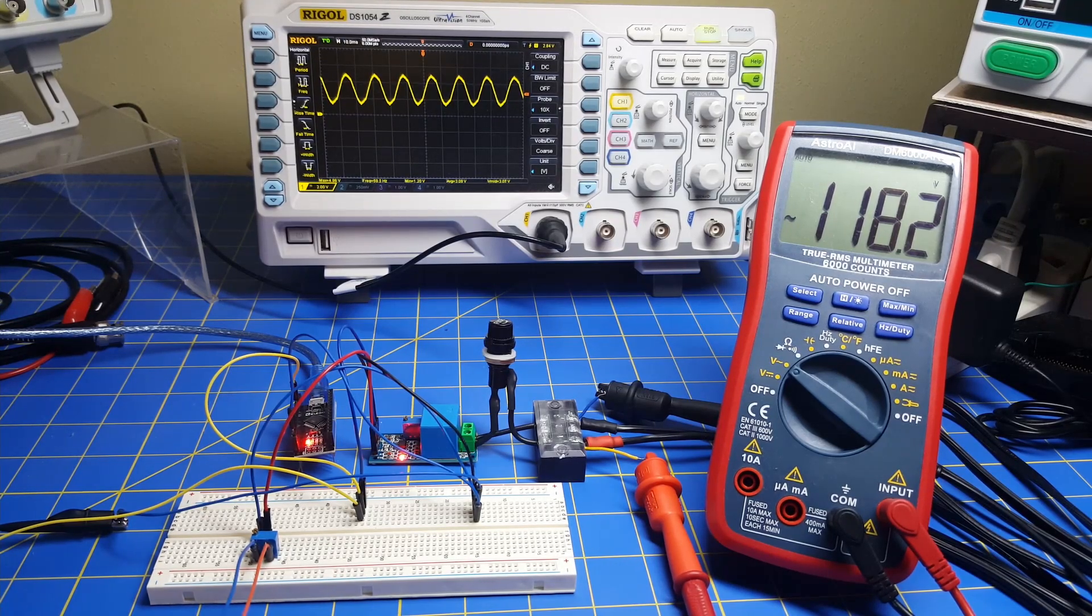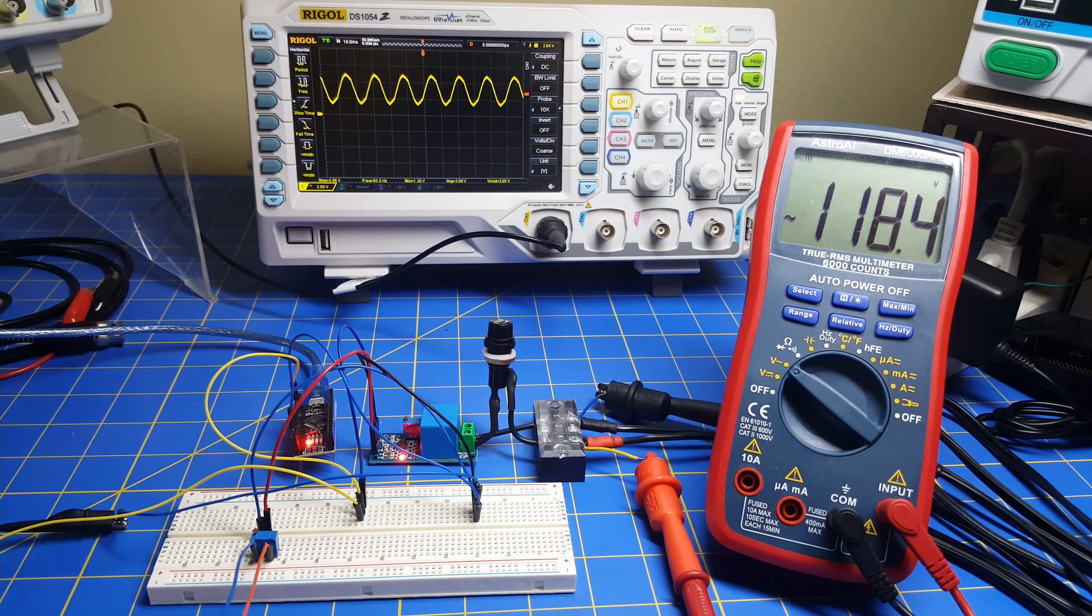Okay, so welcome back. Now today we're going to start taking a look at putting together a very simple system that will monitor and calculate the RMS voltage, the root mean square voltage that appears at your wall outlet.